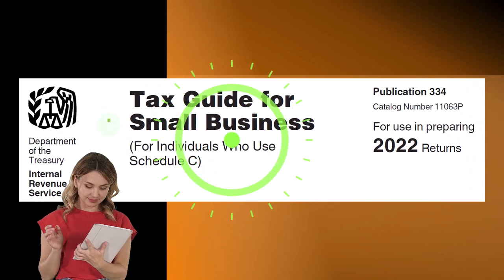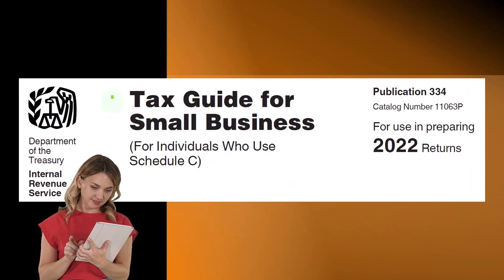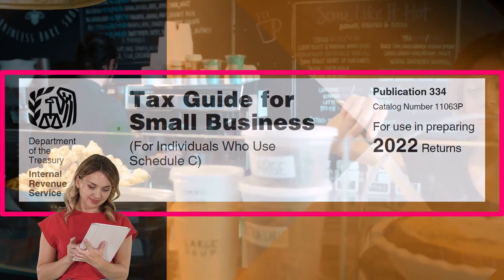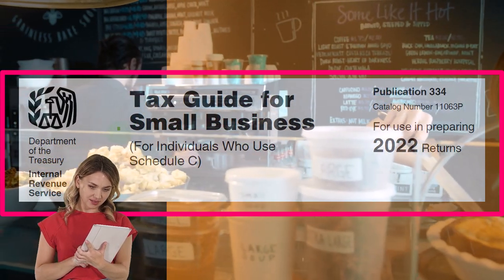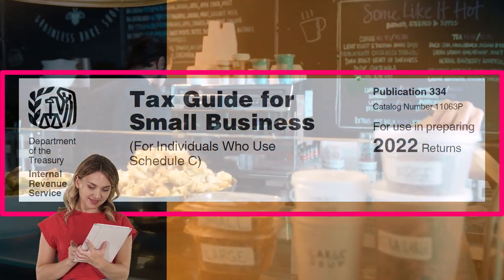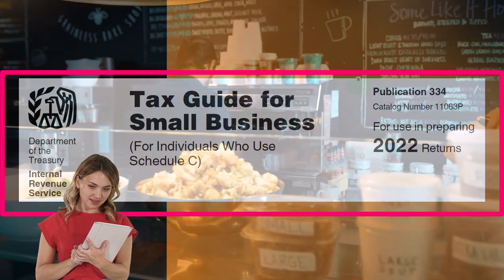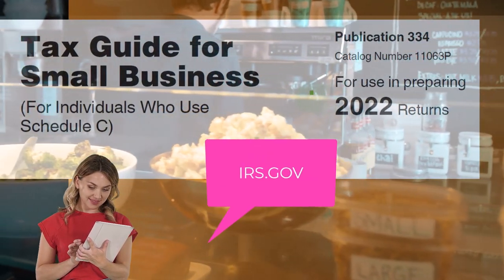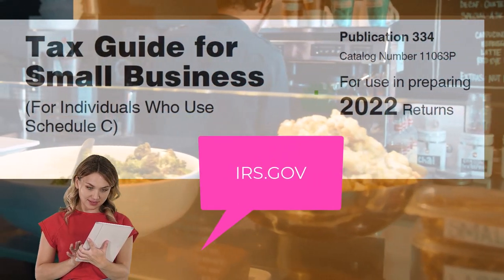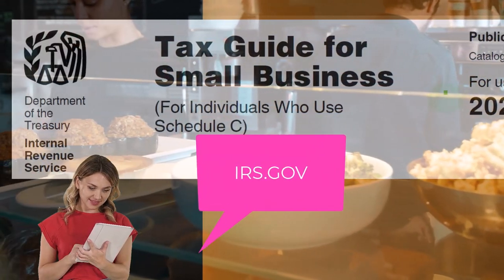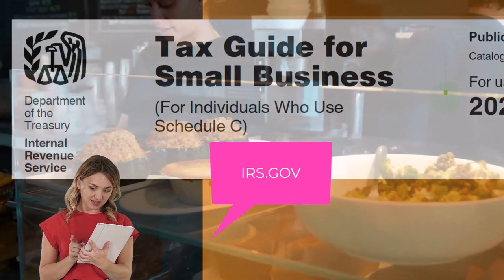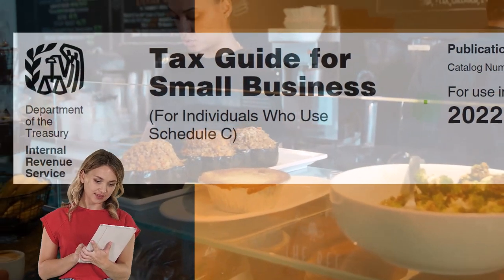Most of this information comes from the Tax Guide for Small Business for individuals who use Schedule C, Publication 334, Tax Year 2022. You can find it on the IRS website at irs.gov.